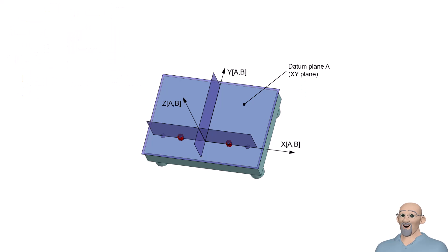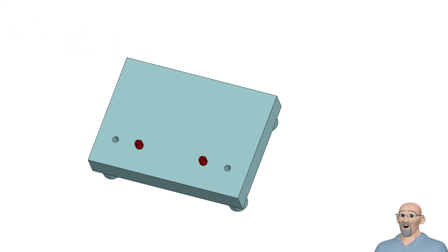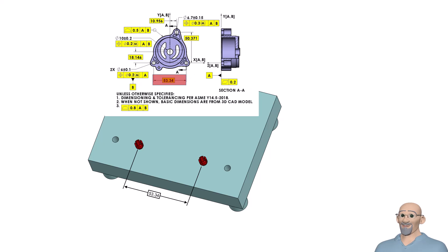Next we have datum feature B, which we have discussed is this pattern of two six millimeter diameter holes. The simulator for datum feature B is two cylindrical pins that are 53.34 millimeters apart as specified by a basic dimension on the drawing. These pins are perpendicular to datum A.